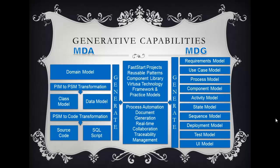OMG coined the concept of fast-starting projects. You can build a reusable patterns component library over time, and also create a technology framework and practice models. After each project is completed, you regenerate or reverse engineer code back to the component level and save them in a pattern library so they can be reused across projects.